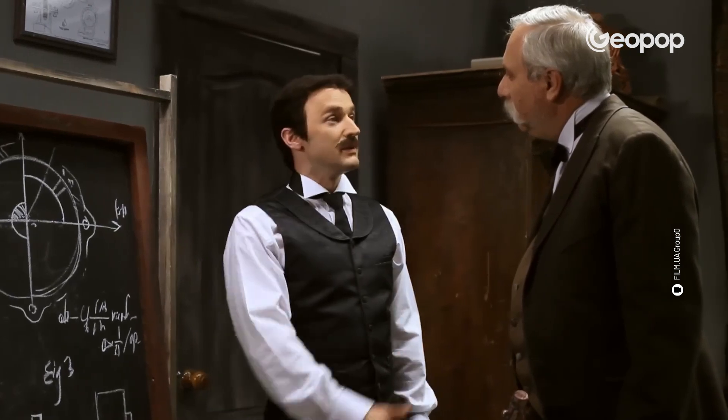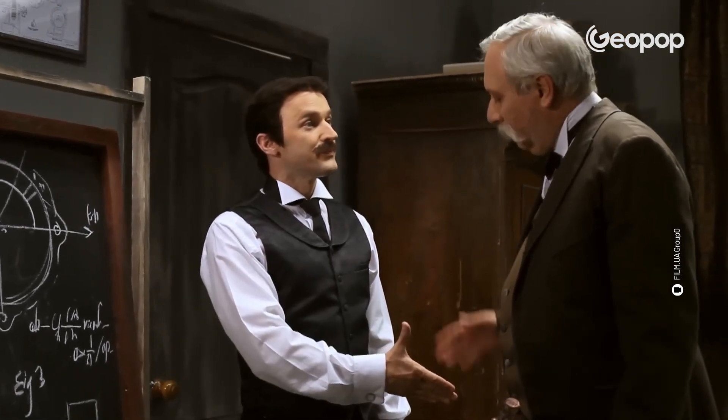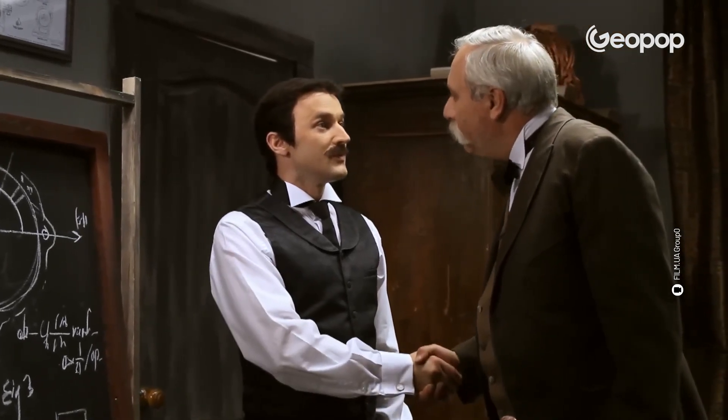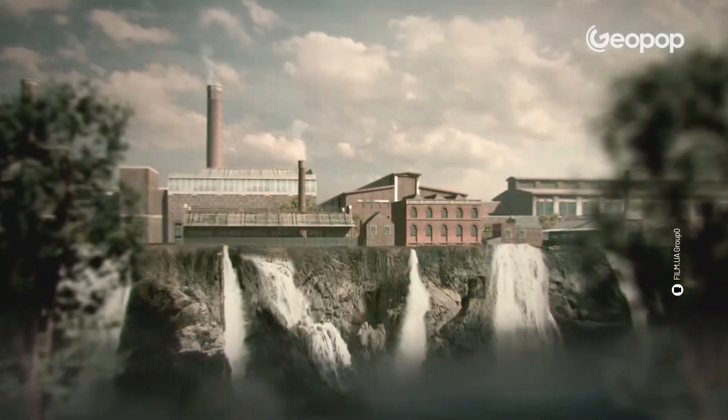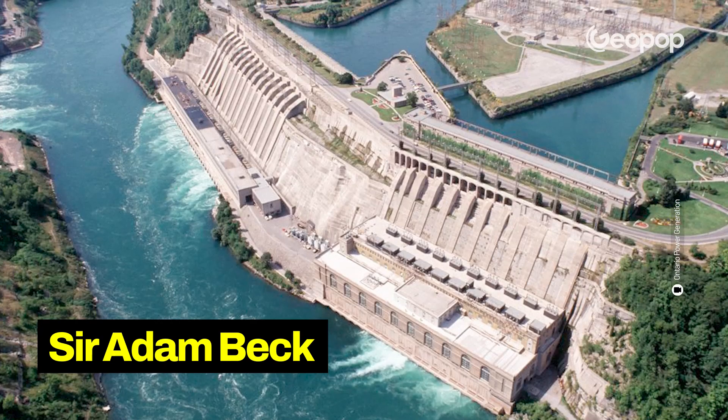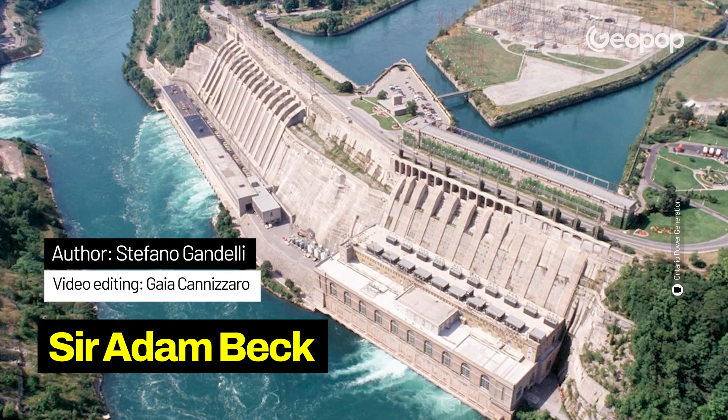Thanks to their ambition, Tesla and Westinghouse managed to accomplish a project that had seemed impossible until then — harnessing the power of Niagara Falls to generate electricity. In other words, in 1895 they created one of the first hydroelectric power plants in history. Today this power plant is no longer operational, although it can still be visited by tourists, and in its place two other plants have been built: the Sir Adam Beck One and the Sir Adam Beck Two.